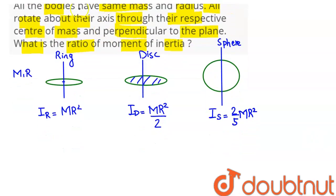Hence, their ratio - ratio of moment of inertia is being asked. So the corresponding ratio comes out here as moment of inertia for ring to moment of inertia for disc to moment of inertia for sphere comes as MR² to MR²/2 to 2/5 MR².